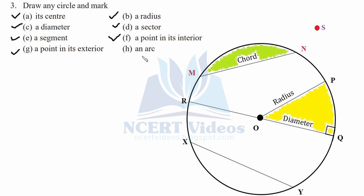G part: a point in its exterior — S is clearly visible outside the circle. H part: an arc — MN is an arc joined by two points on the circle. Similarly, PT and XY are also arcs on the circle. An arc is always on the circle. This was your H part.